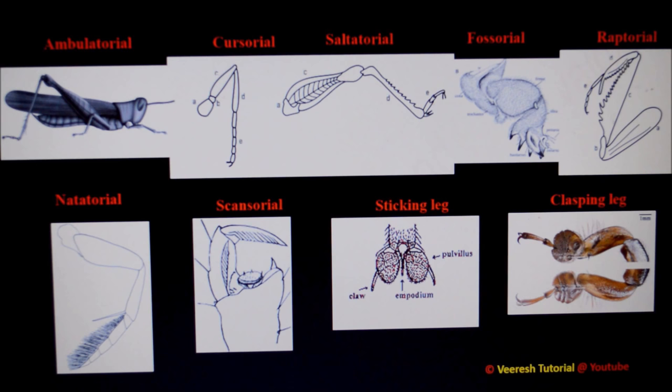The next type is sticking-type legs. In houseflies, instead of aroleum, empodium is present. The pulvillus, a pad-like structure at the base of the claw, is provided with glandular hairs called tenant hairs. These tenant hairs secrete sticky substances which are useful in clinging to smooth surfaces.